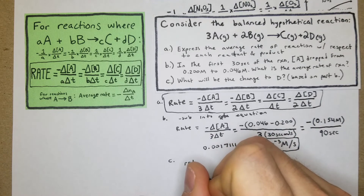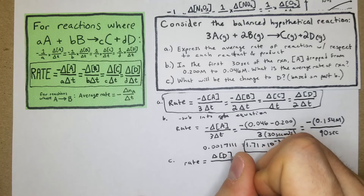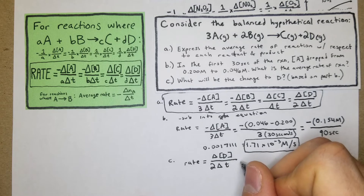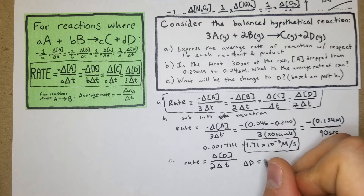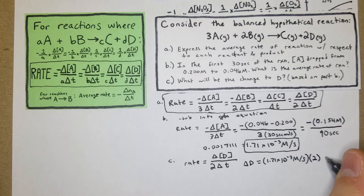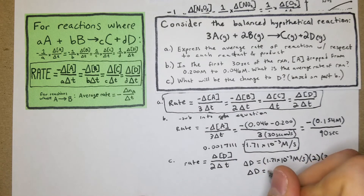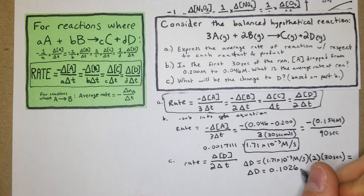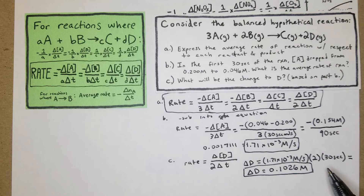For part c, we need the change in concentration of D. We set up Δ[D] over 2Δt and solve: Δ[D] equals 1.71 × 10⁻³ times 2 times 30 seconds, which gives Δ[D] equals 0.1026 M. The question specifically asks for the change, and that's exactly what we calculated.